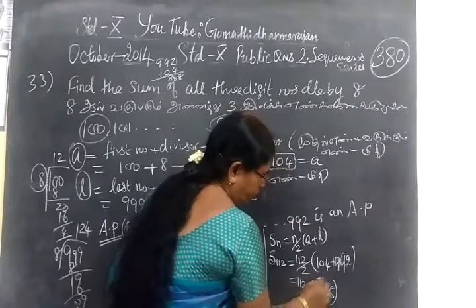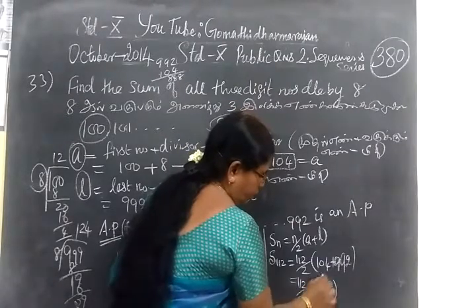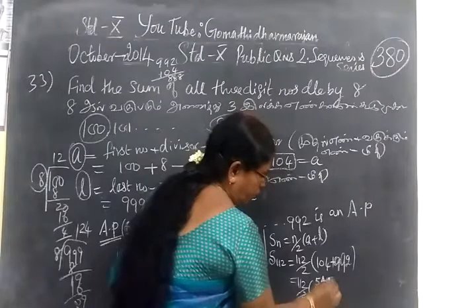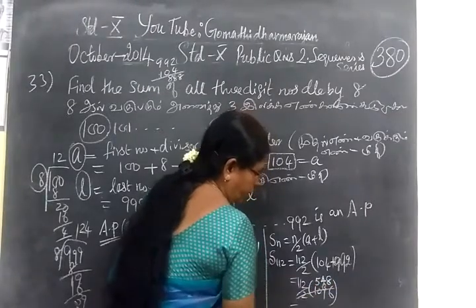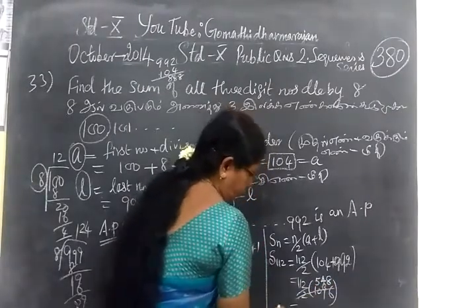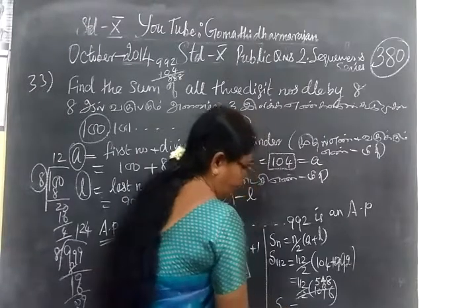You cancel the numbers. This is 548 and this is 2. So 548 into 56. Now which is tested answer for this.